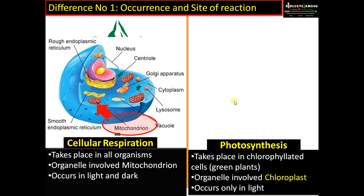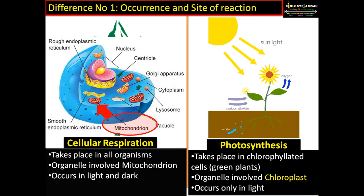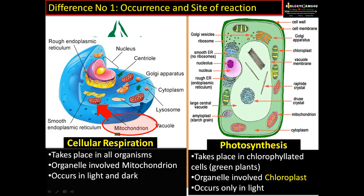Whereas photosynthesis takes place only in chlorophyllated cells or green plants, so the chloroplast is required. This is a plant cell and you can see this is a chloroplast — the organelle involved in photosynthesis. Light is essential for photosynthesis to convert light energy from sunlight into chemical energy.